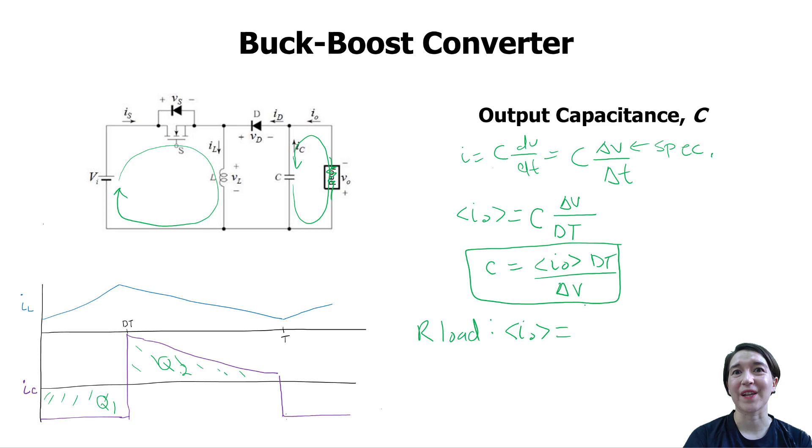From Ohm's law, we know the output current is going to be the output voltage divided by R. So we can just plug that into our equation, and we would get C as the average output voltage divided by R, and then we have delta v at the bottom, and then we multiply this by dT. And you would have to plug in the value for v_out and then you get your capacitance value.